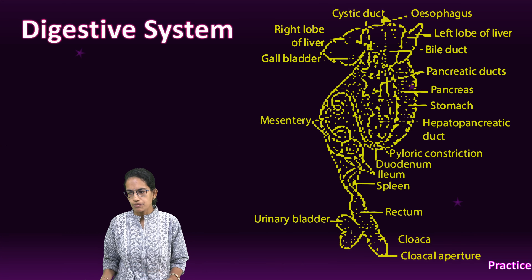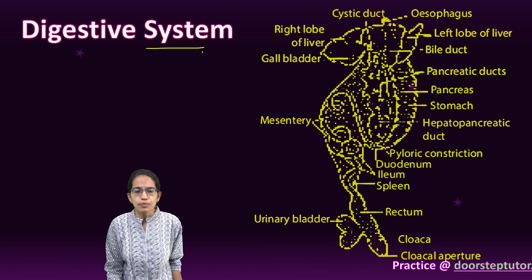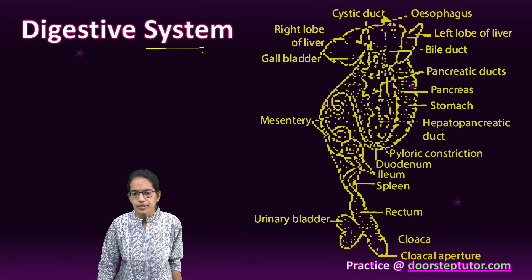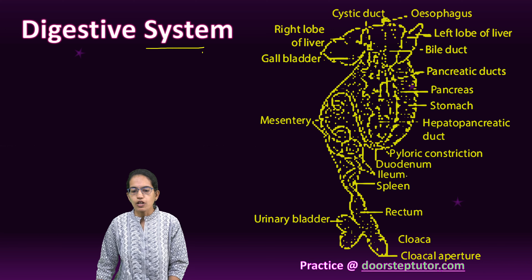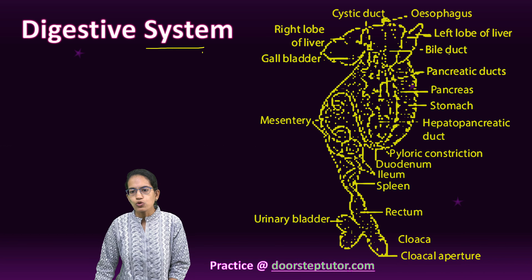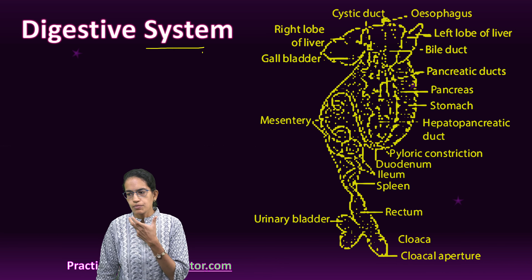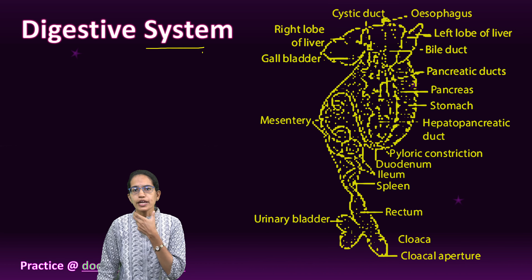Let's talk about the nervous and the digestive system of the frog. The nervous and digestive system of the frog is relatively simple. The digestive system includes the alimentary canal along with the glands.